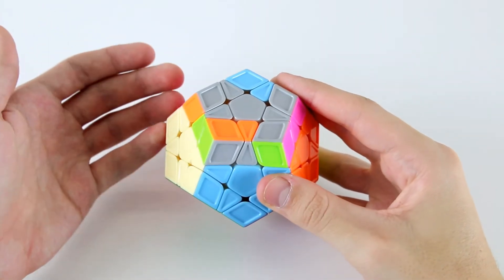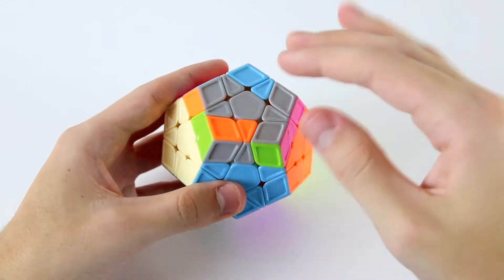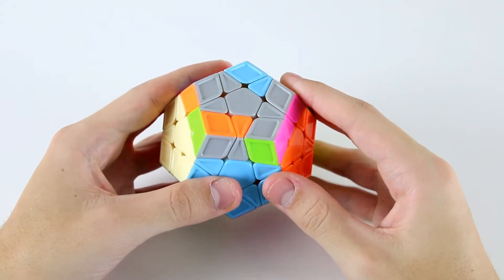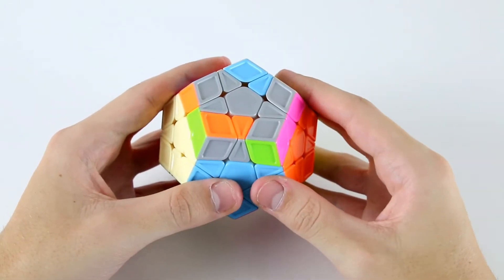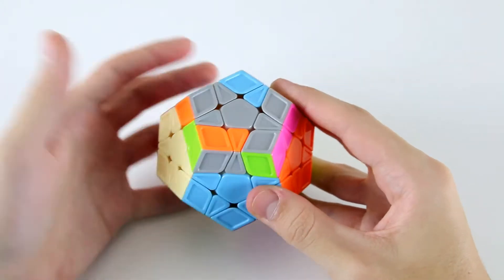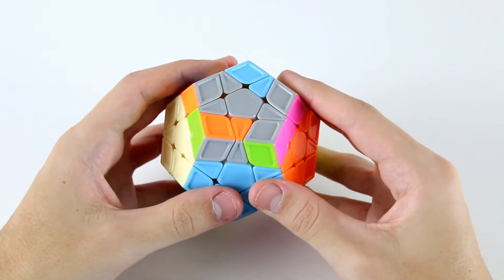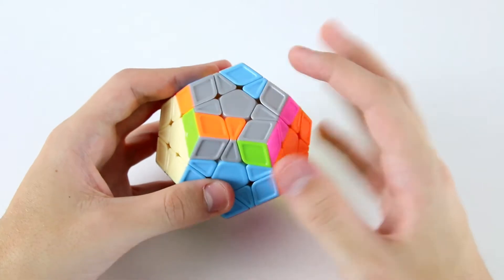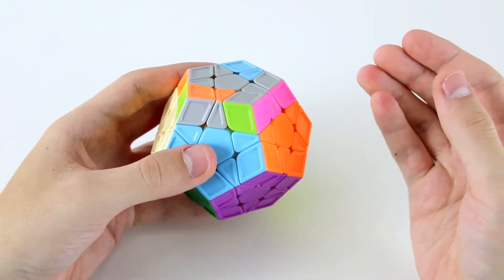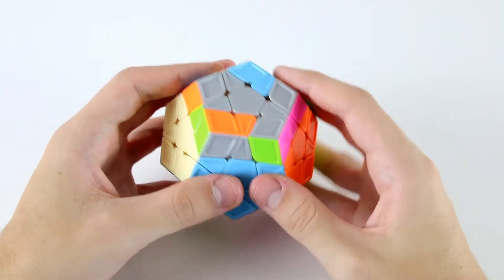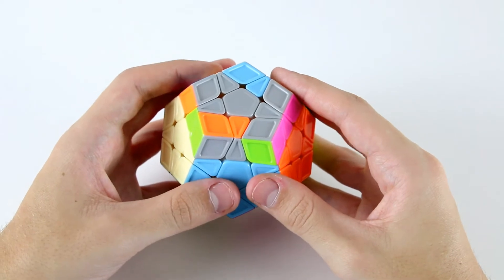Basically, go through your 3x3 OLLs and apply them to the Megaminx and see what sort of patterns you get. Then all you need to do is memorize those patterns and memorize which algorithms belong with those patterns. You'll already know those algorithms, so you won't need to worry about learning new finger tricks or anything like that.